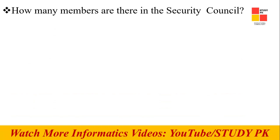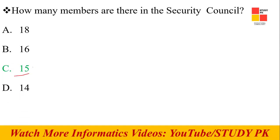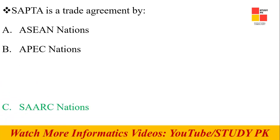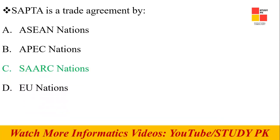Next question: How many members are there in the Security Council? Total 15 members — 5 permanent and 10 non-permanent. Next question: SAFTA is a trade agreement with total 8 South Asian countries.